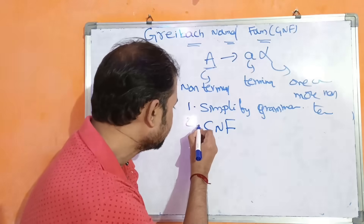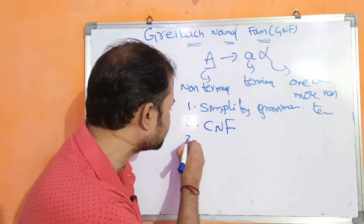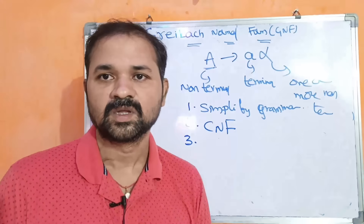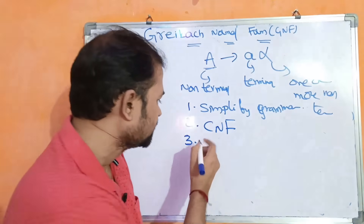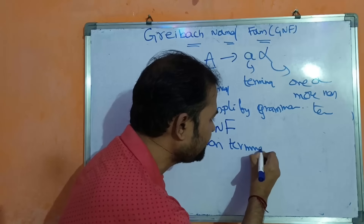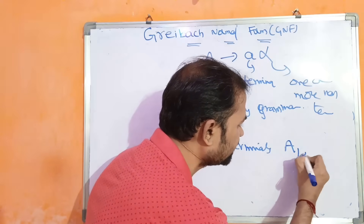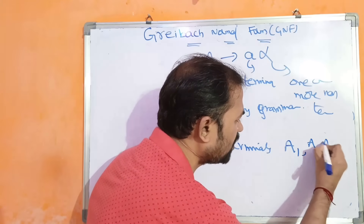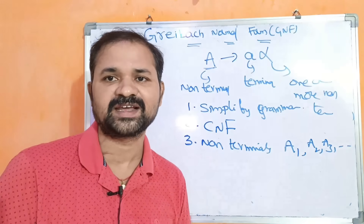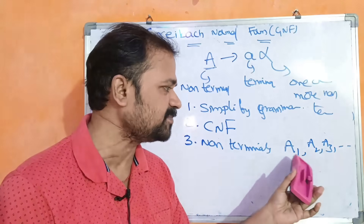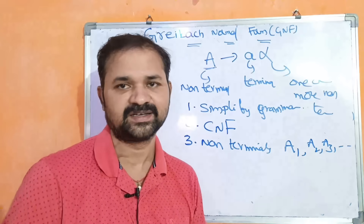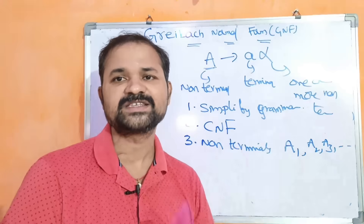The next step is that the non-terminals of the grammar are to be replaced by A1, A2, A3, and so on. If there are 5 non-terminals in the grammar, those 5 non-terminals are replaced by A1, A2, A3, A4, A5. A1 means the starting symbol of the grammar.